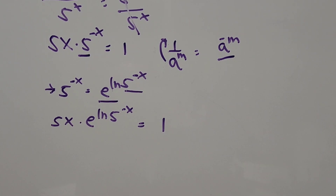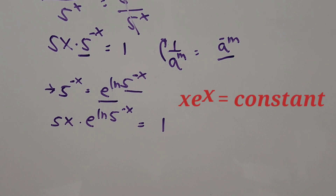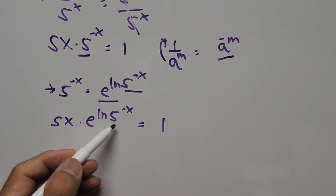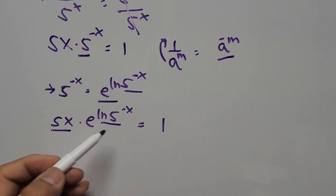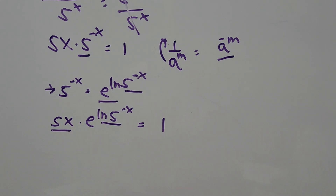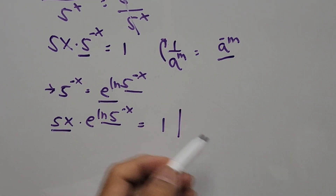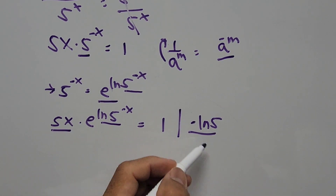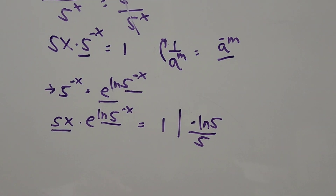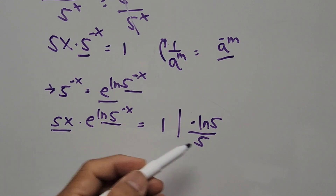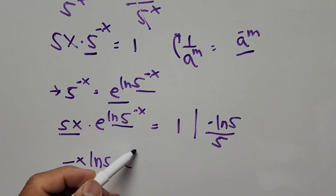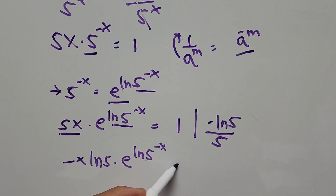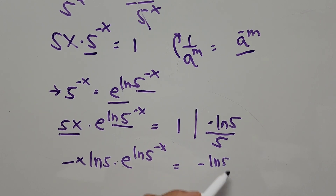Our aim is to follow the equation format x times e to the power of x equals constant. The exponent right here is ln of 5 to the power of negative x, so we must transform 5x to make it ln 5 times negative x. We're going to multiply the whole equation by negative ln of 5 and at the same time divide by 5. So 5 divided by 5 gives x, and we get negative x ln 5 times e to the power of ln 5 times negative x equals negative ln of 5 divided by 5.